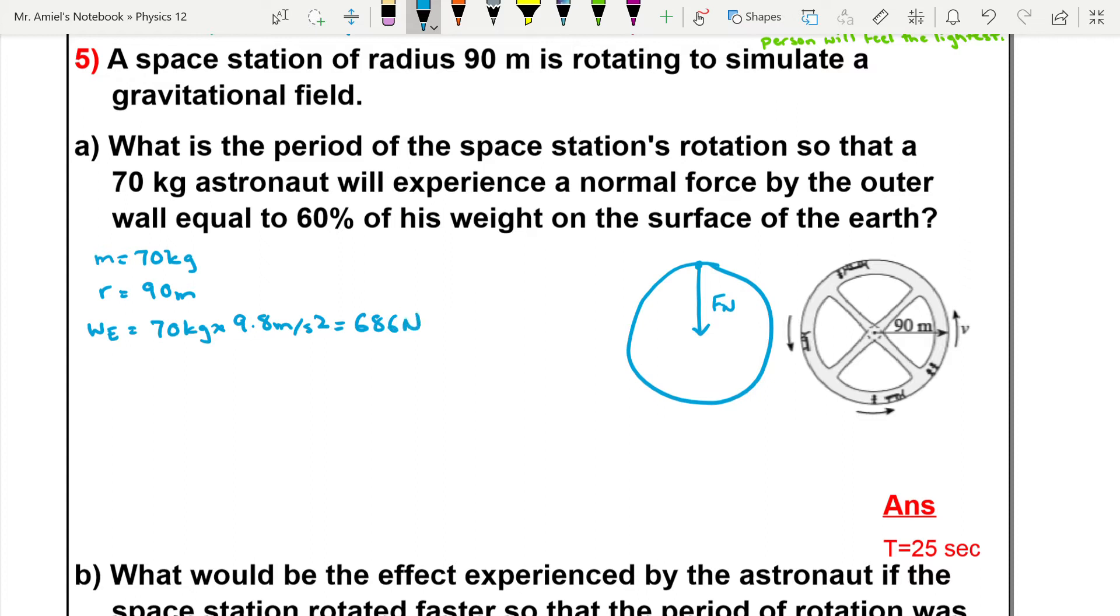686 Newtons. But the question's asking us what would the period be if the weight of the astronaut were only 60% of that on Earth. So we've got the weight on the space station is actually going to be...